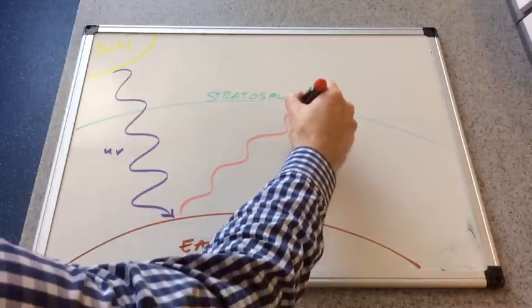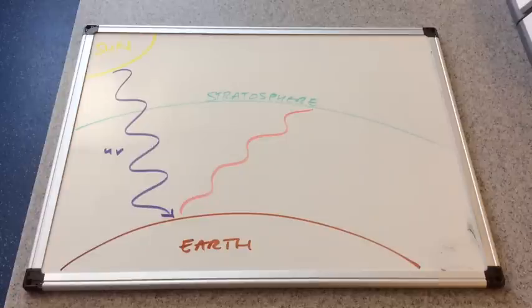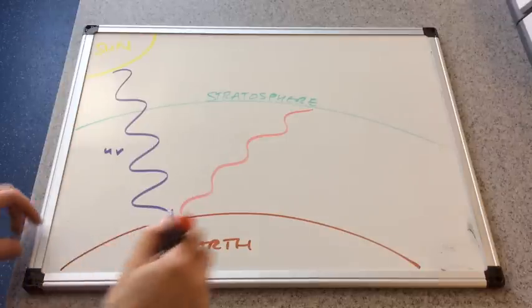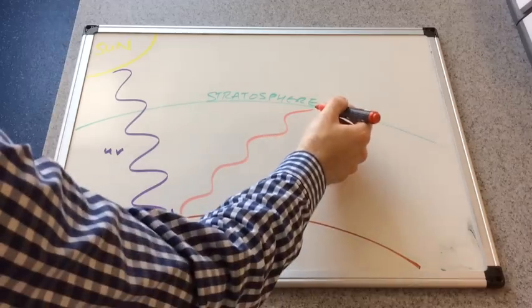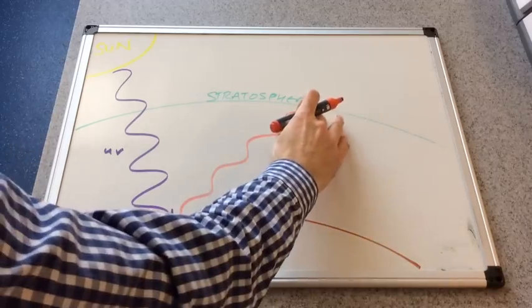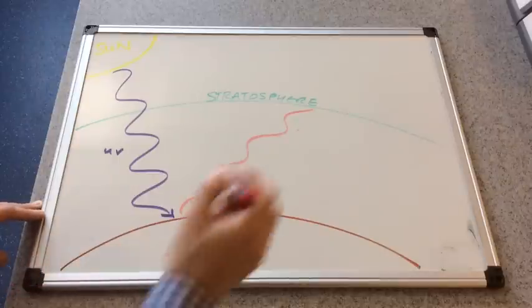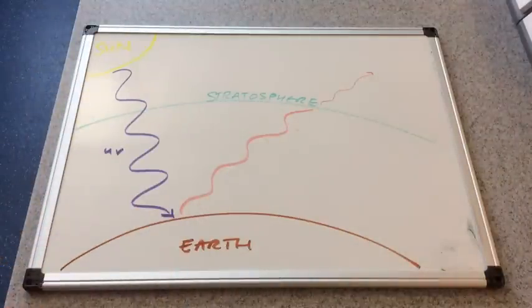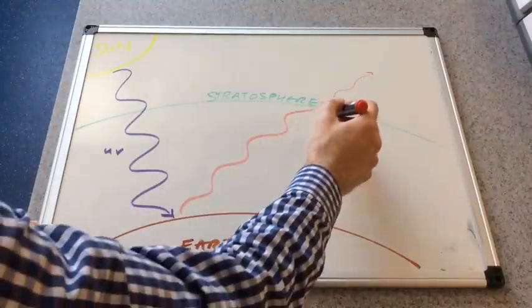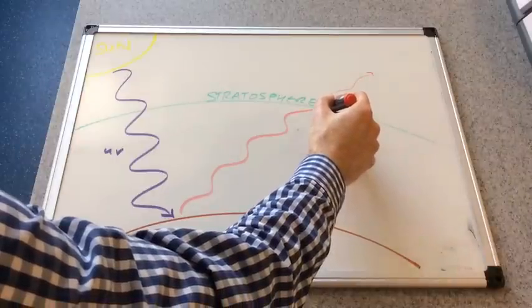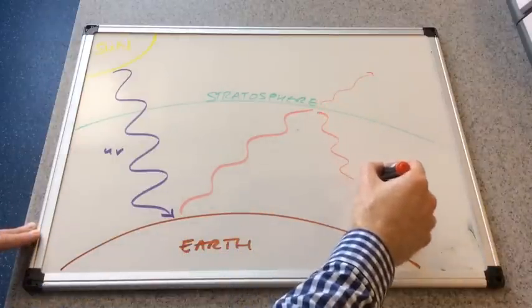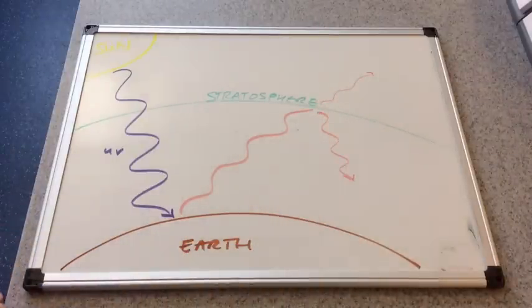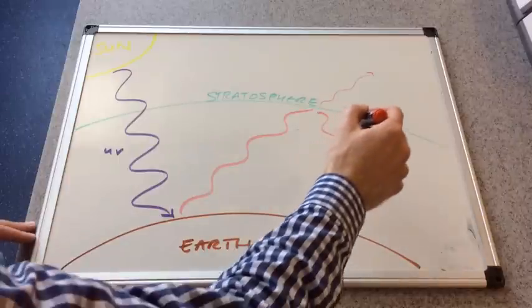So I've changed color pen to red. This is a longer wavelength and I've deliberately stopped at the stratosphere. So what happens to this infrared? Well, some of it gets through but some of it is actually sent back to Earth.